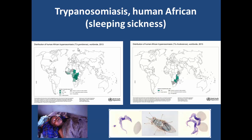The other version is the Gambiense version, found mostly in western Africa but also a little bit of southwest Africa, including Congo, Niger, Nigeria, and some countries in the southwest curve of Africa. They have different geographical areas that they can infect. As you can see, it's caused by the trypanosomiasis parasite, which is transmitted by the tsetse fly.